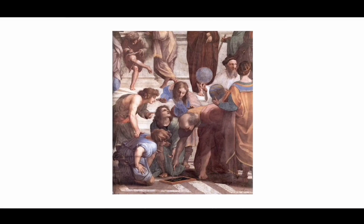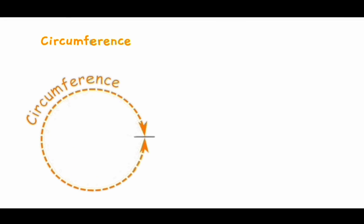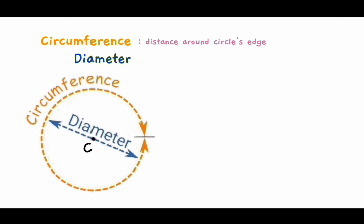Early mathematicians noticed that there is a special relationship between a circle's circumference, the distance around its edge, and its diameter, the distance across the circle through its center. If we take a circle of any size and divide its circumference by its diameter, you will always get the same number, pi.